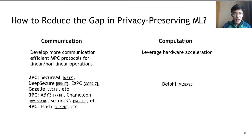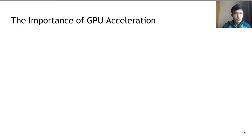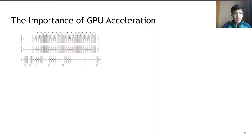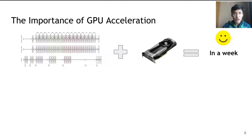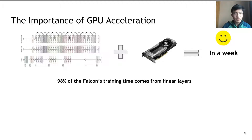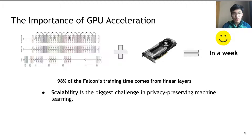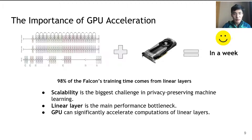GPU acceleration is extremely important for machine learning. For example, if you want to train ResNet on ImageNet on a single CPU, it would take over a year. However, on a single GPU, it would take only roughly a week. If plaintext machine learning needs GPU to train a model, so does privacy-preserving machine learning. In fact, we observe that 98% of Falcon's training time comes from computing linear layers. Therefore, GPU can significantly accelerate linear layer computations, and we need GPU acceleration for privacy-preserving machine learning.